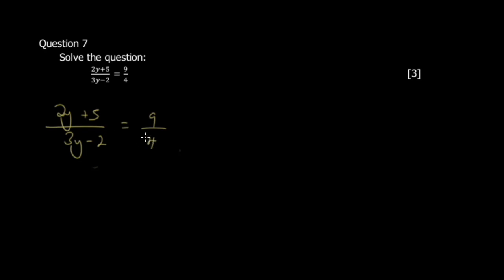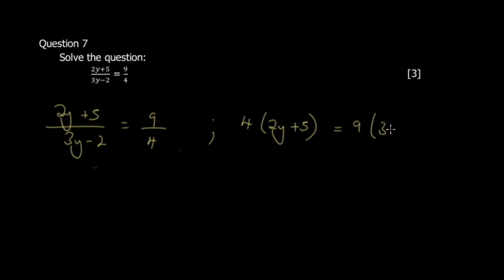What we do here is cross-multiply to eliminate the fractions — the 4 goes to the left side and the (3y − 2) goes to the right. Don't forget to use brackets for the whole expression. The quick way is: 4(2y + 5) = 9(3y − 2).